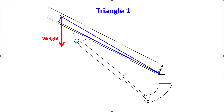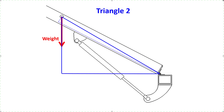Here's triangle number 1. It's a right triangle. The adjacent side is dimension B, the distance to the center of mass of the lid determined from the CAD model. The opposite side is dimension C, also determined from the CAD model. The hypotenuse can be calculated using the Pythagorean theorem, and the angle of triangle 1 can be calculated using the inverse tangent function. Here's triangle number 2. The hypotenuse of triangle number 2 is the same as triangle 1, which is why we needed to analyze triangle 1 first. The angle for triangle 2 can be determined by adding the lid angle to the angle from triangle 1. The adjacent side can be determined using the cosine function and the opposite side using the sine function.